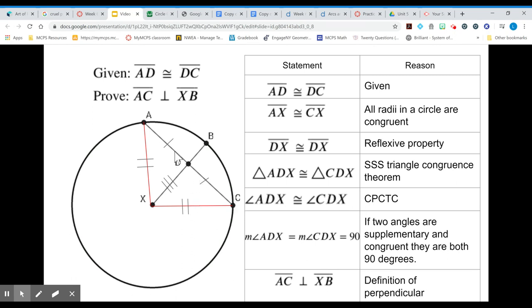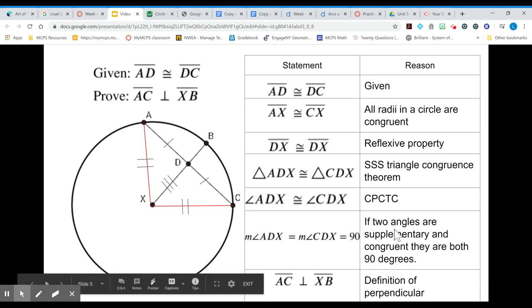Since these two angles form 180 degrees they're supplementary because they form a line we know that if two angles are supplementary and congruent they must be 90 degrees. So therefore if these two angles are 90 degrees the two lines are perpendicular.